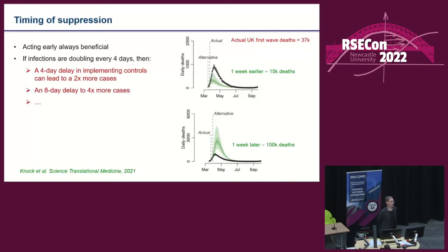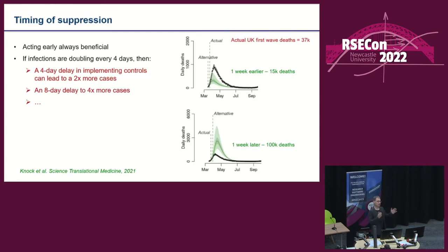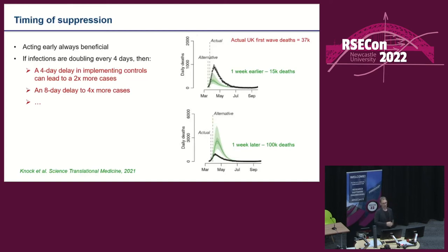The challenge with adopting suppression measures is that in an exponentially growing epidemic, timing becomes critical. If an epidemic is doubling every four days, then every four-day delay leads to twice as many cases before the epidemic starts being pulled down, and therefore double the deaths. In the UK context, had everything been done a week earlier, we'd probably have seen only 15,000 deaths in the first wave rather than 37,000. A week later, we might have seen 100,000 deaths. This is not a criticism, just a reflection on the dynamics. That 37,000 deaths is less than 25% of the now 170,000 deaths the UK has seen.